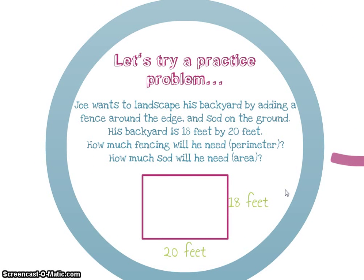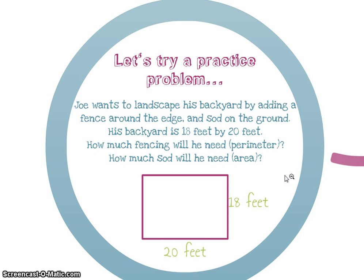Let's try a practice problem with area and perimeter. Joe wants to landscape his backyard by adding a fence around the edge and sod on the ground. His backyard is 18 feet by 20 feet. So how much fencing will he need, and how much sod will he need? Fencing goes all the way around the edges — so we're really finding perimeter. Sod, that roll-out grass, covers the surface area — like the carpet of his backyard — so for that, we would find the area.